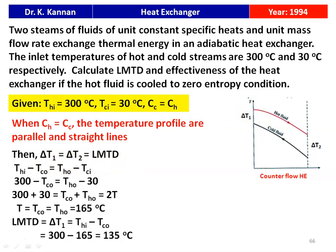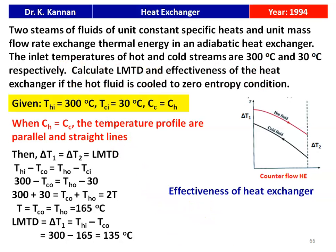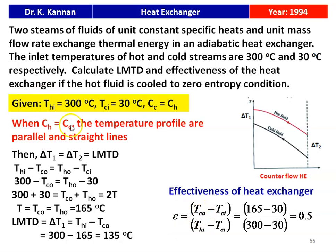Since CH = CC, ΔT1 = THI − TCO = THO − TCI. So 300 − TCO = THO − 30, rearranging: TCO + THO = 330. Since both are equal, TCO = THO = 165°C. LMTD = THI − TCO = 300 − 165 = 135°C. Effectiveness: ε = (TCO − TCI) / (THI − TCI) = (165 − 30) / (300 − 30) = 0.5. So LMTD is 135°C and effectiveness is 0.5.